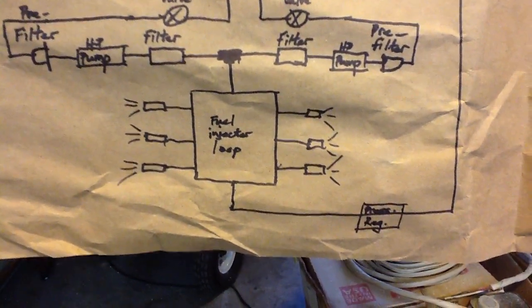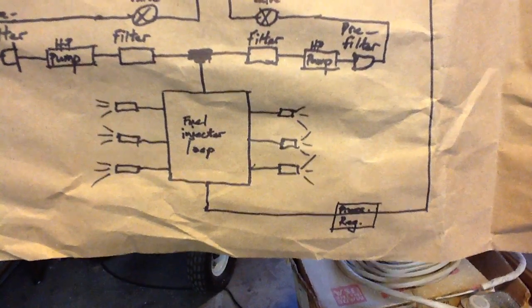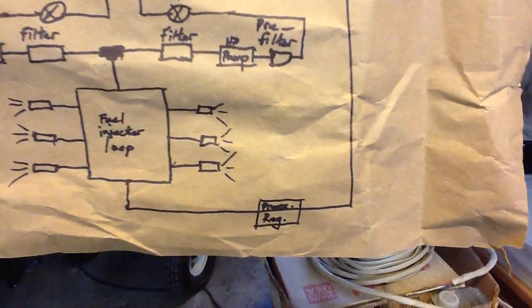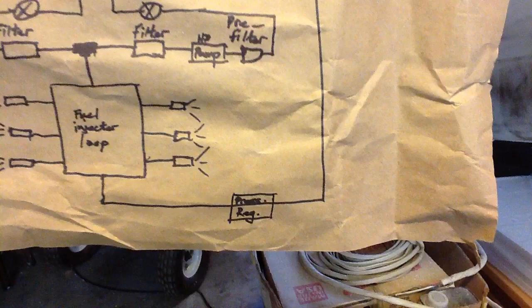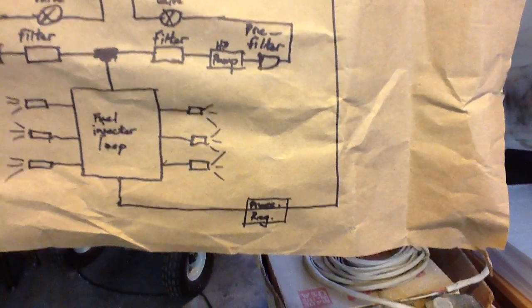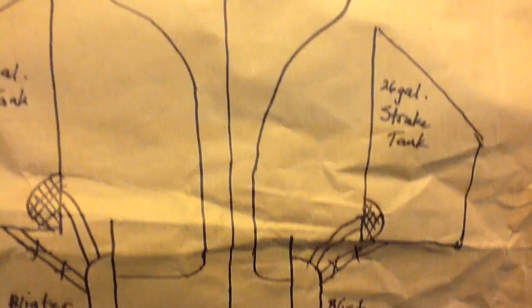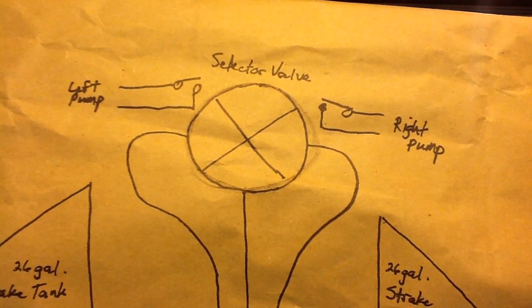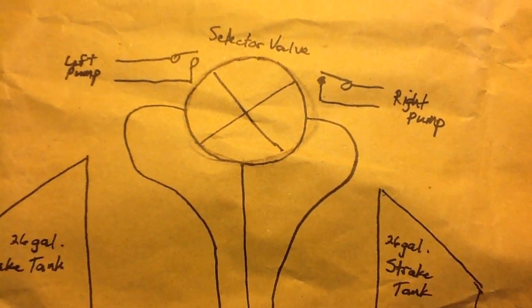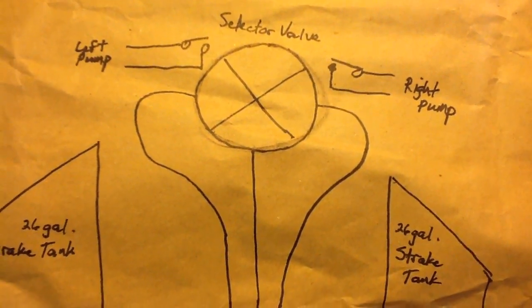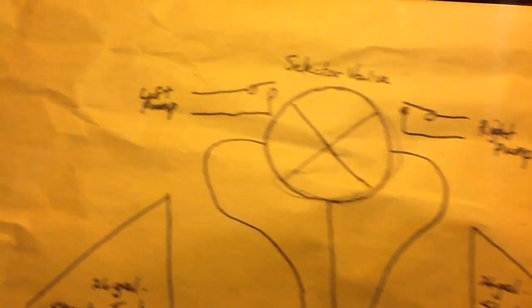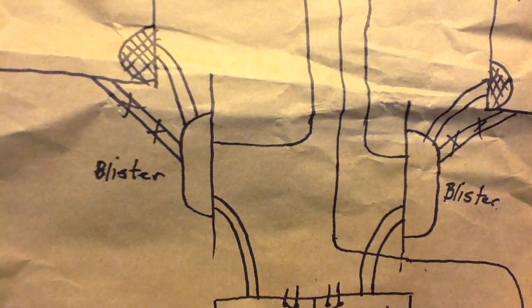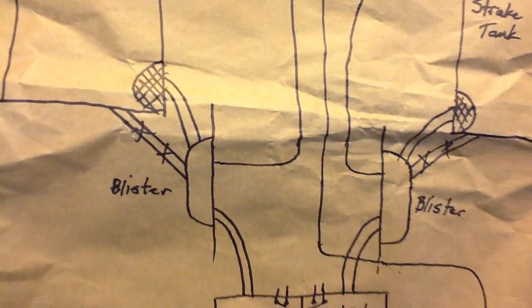Excess fuel then returns out through a line to the pressure regulator, which regulates the fuel at three bars, about 43 psi, goes back up and goes to the selector valve. So I'm using the selector valve to determine where the fuel gets returned to. In this case, it goes out the left line, back down, and back to the blister.